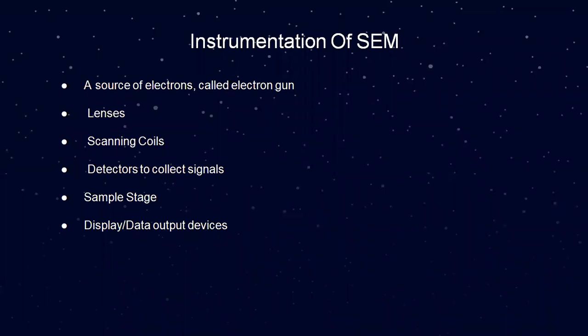Next, I will explain the instrumentation of scanning electron microscope. First, a source of electrons called an electron gun. Second, lenses. Third, scanning coil. Fourth, detectors to collect signals. Fifth, sample stage. And last, display and data output devices.